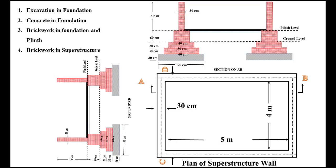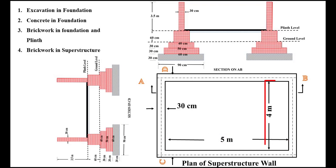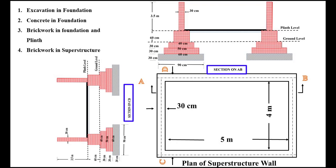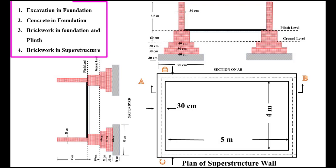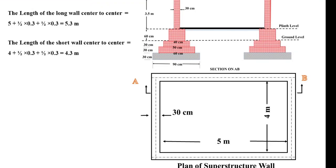Hi, my name is Engineer Shahzad. Today we will discuss the quantity estimation of a single room having internal dimensions of 5 meter length and 4 meter width. The given plan and superstructure is shown, with section views taken in both directions: section A-B and section C-D. Excavation in foundation for both the long walls and short walls, concrete in foundation, brickwork in foundation and plinth, and brickwork in superstructure are discussed in detail.